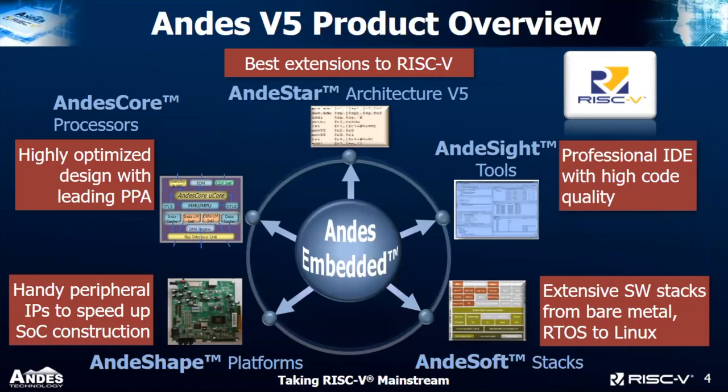AndesTech provides a comprehensive product portfolio to support customers. At the top we have ND Star, which is V5 architecture based on RISC-V ISA. ND Core is our highly optimized CPU core. ND Shape is our FPGA platform that helps customers evaluate and validate their SoC design. ND Tool helps designers build applications on our CPU, and ND Soft is our BSP providing many different software stacks.